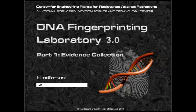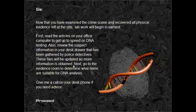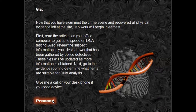Part 1: Evidence Collection. Now that you have examined the crime scene and recovered all physical evidence left at the site, lab work will begin in earnest. First, read the articles on your office computer to get up to speed on DNA testing. Also, review the suspect information in your desk drawer that has been gathered by police detectives — these files will be updated as more information is obtained. Next, go to the evidence room to determine what items are suitable for DNA analysis.